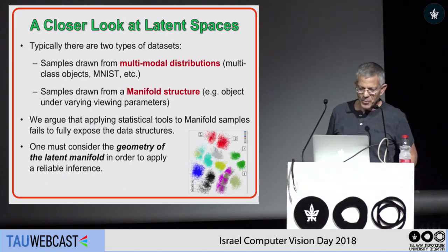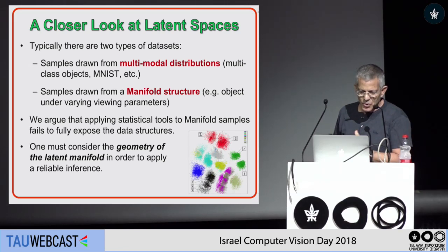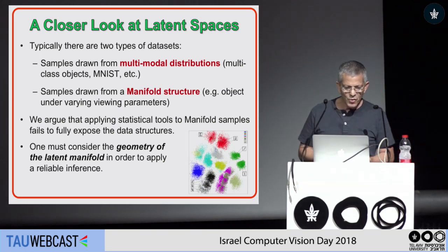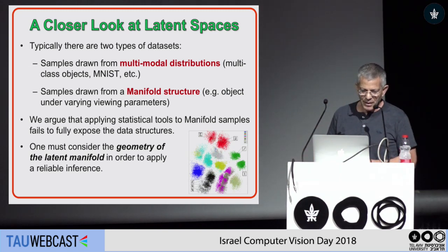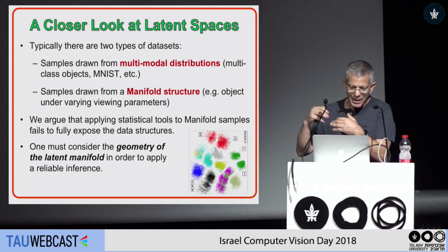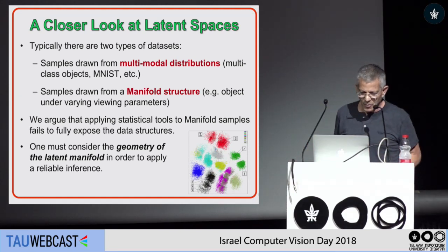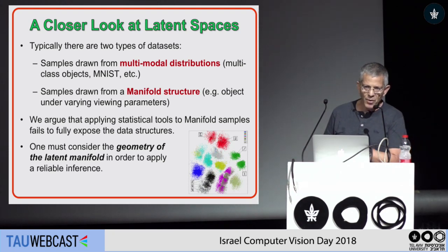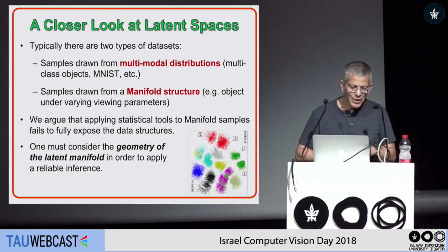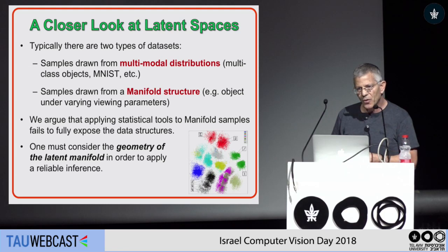Let's take a closer look at the latent space. Typically, we have two types of datasets: data drawn from a multi-modal distribution — like multi-class objects, MNIST, and so forth — and samples drawn from a manifold structure, for example, objects under varying viewing parameters. We argue that applying statistical tools to manifold samples fails to fully expose the structure or the correlation in the data, and one must consider the geometry of this manifold in order to apply reliable inference in the latent space.